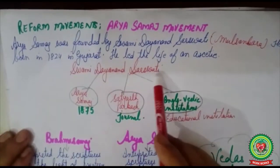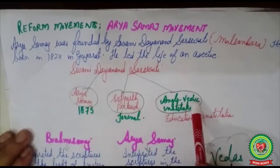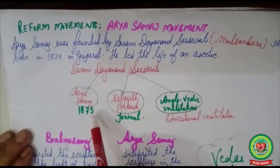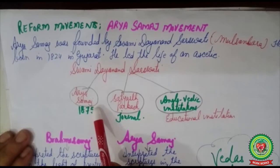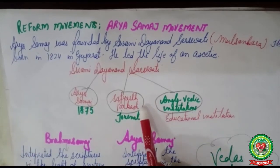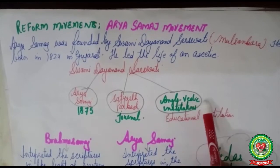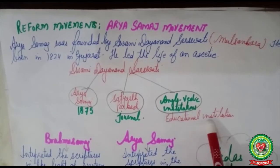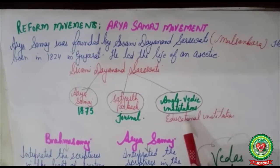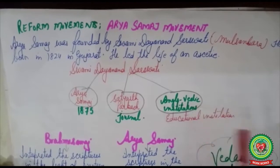Swami Dayananda Saraswati is given credit mainly for three things. He set up Arya Samaj in 1875. To popularize Arya Samaj, he published a journal called Satyarth Prakash, and he also set up Anglo-Vedic institutions — educational institutions where ancient Vedic education was imparted in the English language.